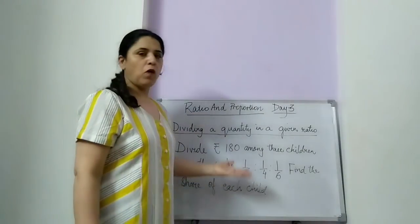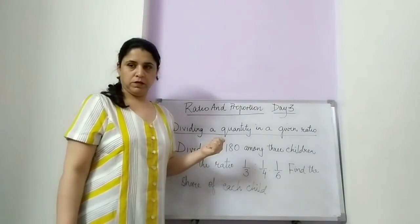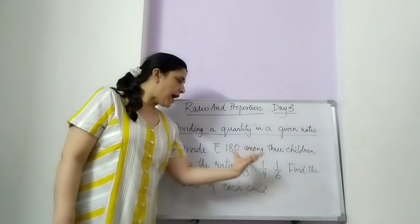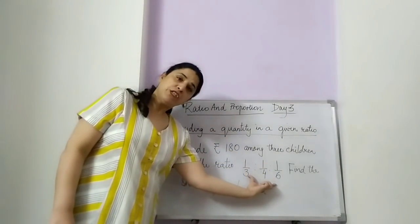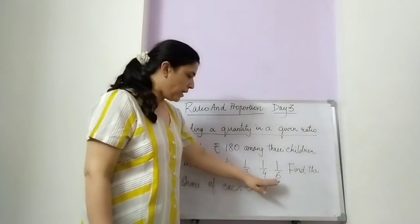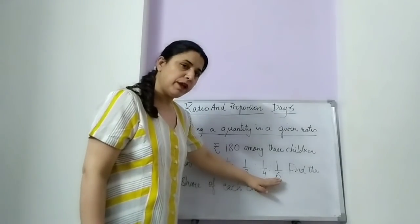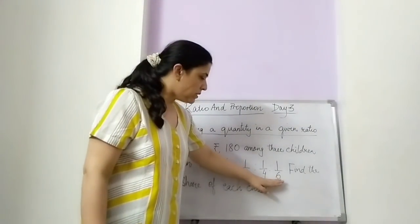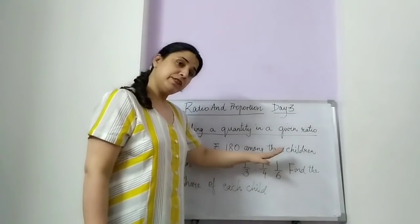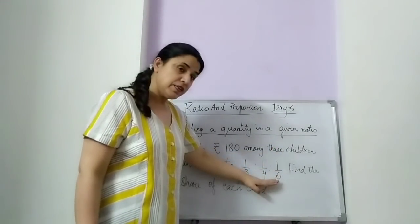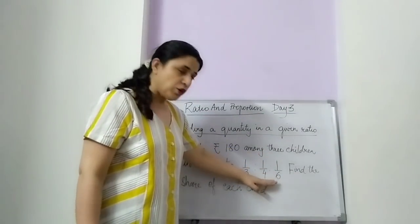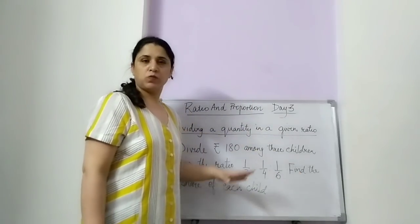Find the share of each child. How will you do this? This is the amount that has to be divided in this ratio. What should be the first step? Can anybody tell me? This ratio has to be simplified first. And the very first lesson we have learnt is how to simplify a given ratio which is in the fractional form to the simplest form.